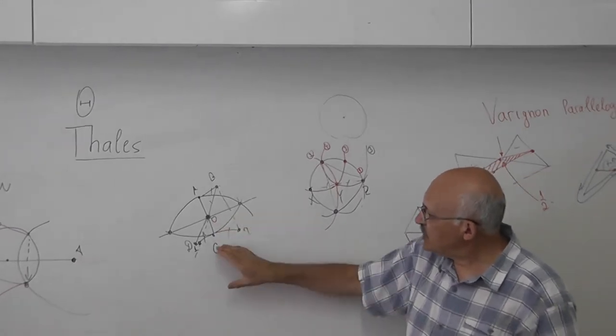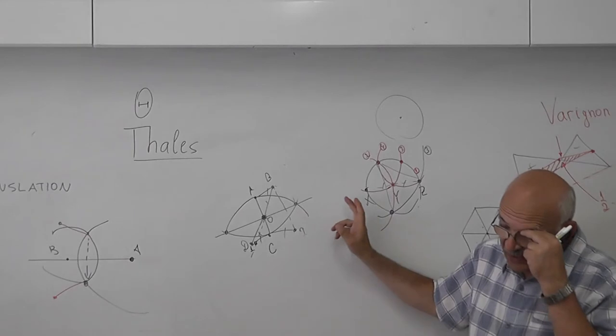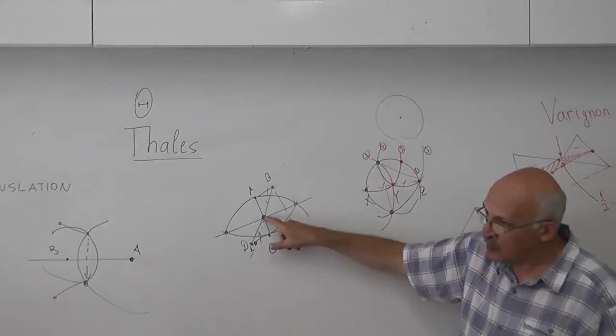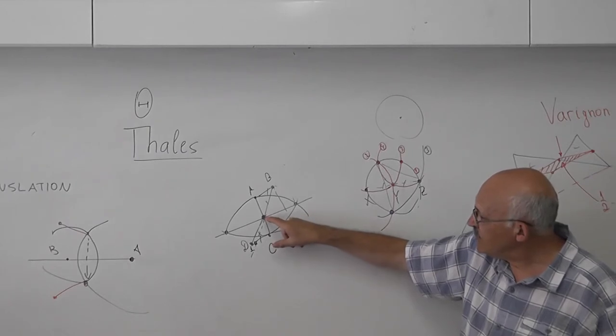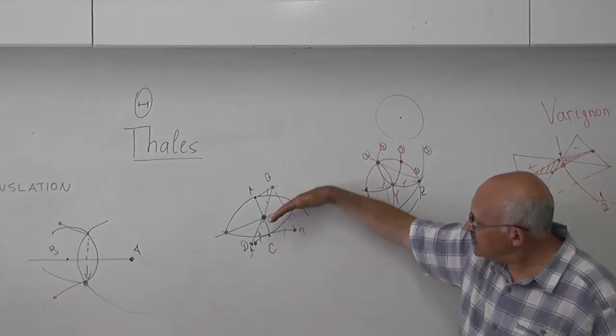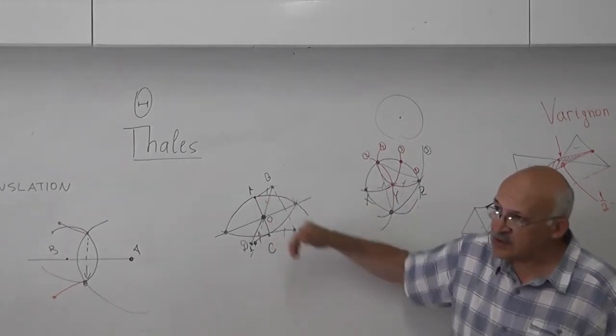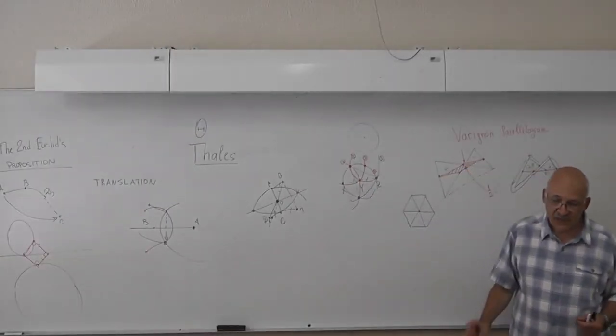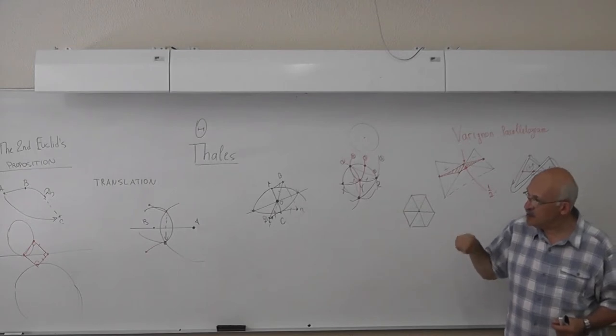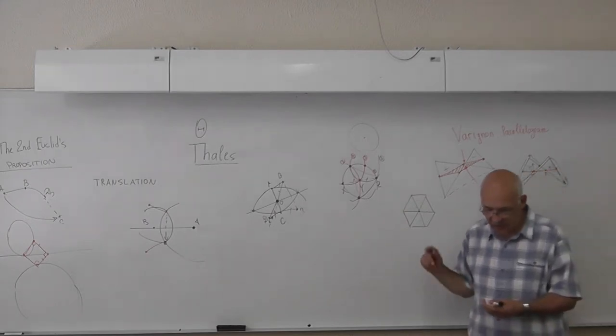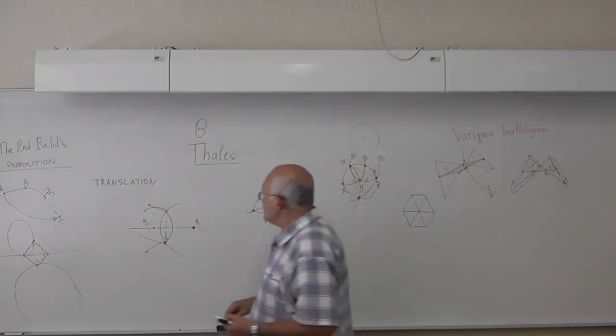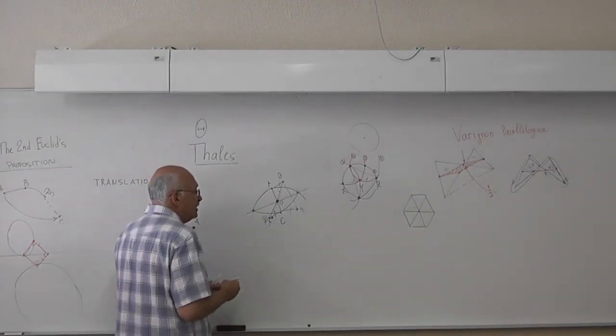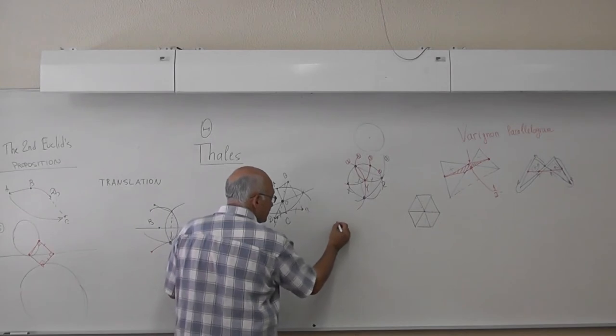You can come back to our original construction. Even though we can obtain D1 from B, we have O, but to have O we need a line. O is the intersection of two lines. So it is compass and ruler construction, not only compass. But if we want to do it only with the compass, then it is no problem.